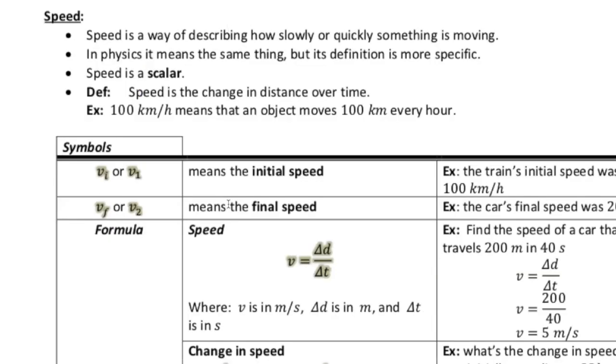Speaking of speed, that's what we're talking about next. So speed is a way of describing how slowly or how quickly something is moving. And again, often people will use speed and velocity interchangeably, but they mean different things. For instance, speed is a scalar. And the definition of speed is the change in distance over time.